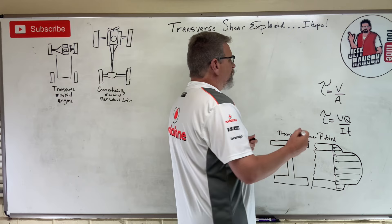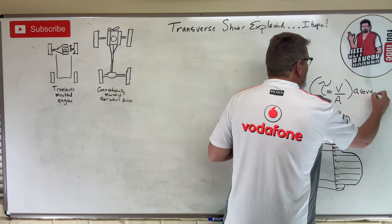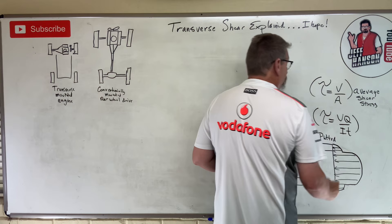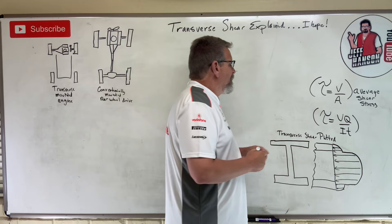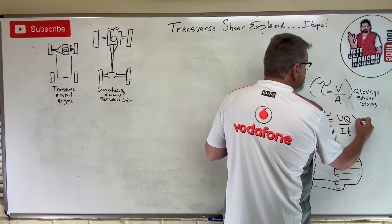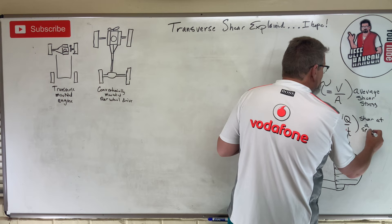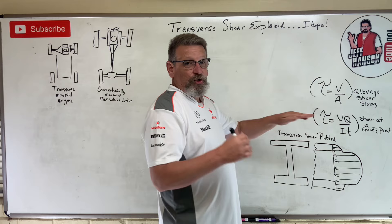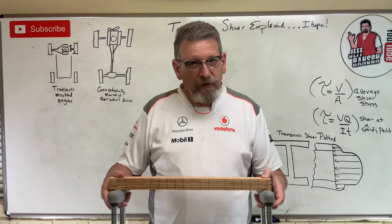It turns out that V over A is what we call average shear stress. The VQ/IT equation gives you shear at a specific point. Whereas V over A is the average across the whole face, VQ/IT will tell you the shear value at any point on the beam.